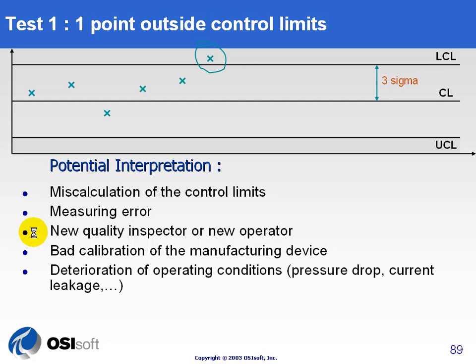The first thing most people think of immediately is deterioration of operating conditions. It could be that, or it could be some of these measurement errors, but it could, in fact, be that your operating conditions are going bad on you. You're not running the process the way you should be, and now is the time to change your target limits or change control in some way. Remember that the point of waiting for three standard deviations is so that people won't over-control. In operations, people tend to over-control rather than under-control. We want to make sure that people don't do anything until they see something that really indicates an assignable cause variation. You could also have inadequate raw material, or simply new instrumentation measuring error.